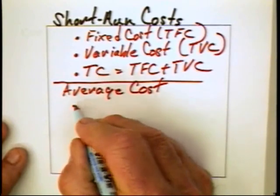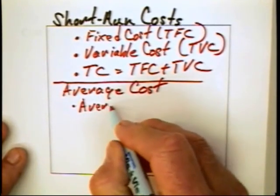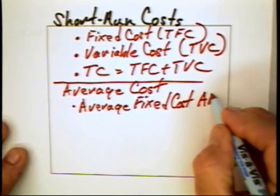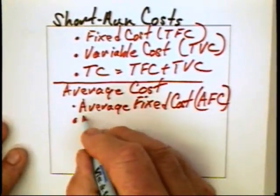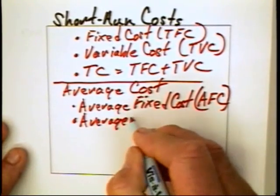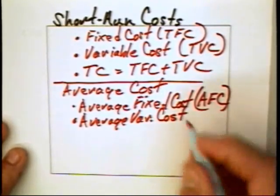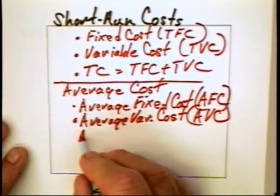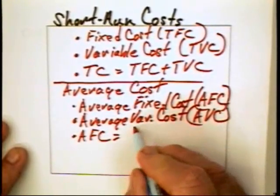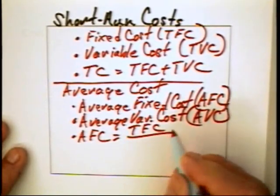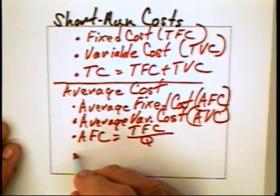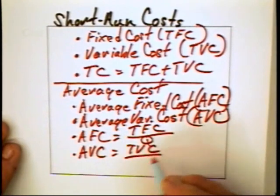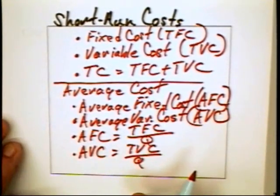This means that you have something called average fixed cost (AFC) and average variable cost (AVC). The AFC is going to be equal to the total fixed cost — which of course is not changing — divided by the quantity. The average variable cost is going to be the total variable cost divided by the quantity that is produced.